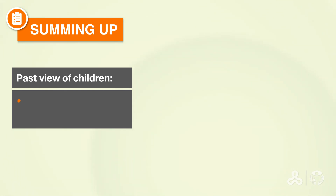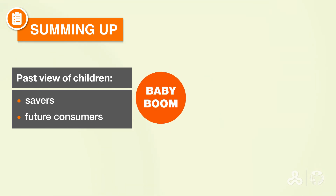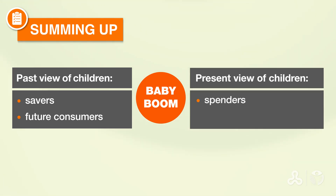Let's summarize what we've read in the introductory section, paragraphs 1 to 5. In the past, children were viewed as savers and future consumers (כחוסכים וכצרכנים עתידיים). Then after the baby boom — after World War II when all of the men came home — we had an increase in births, and this generation changed the perception of children as consumers. Today they are seen as spenders (כמוציאים כספים) and today's consumers.